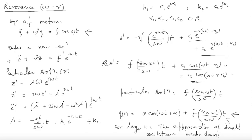Next we should look at damped oscillations, and then we will have both damping and forcing present together and look at the solution in that case. Eventually we would like to see what we can say when we have a system of more than one degree of freedom — can we again bring in normal coordinates? So that will be our next task.